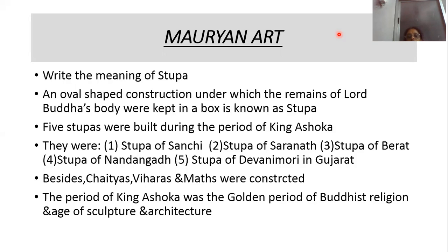The meaning of Stupa: an oval-shaped construction under which the remains of Lord Buddha's body — teeth, nails, hair, ashes, bones — were kept in boxes. Five Stupas were built during King Ashoka: Stupa of Sanchi, Sarnath, Beret, Nandangat, and Devanimori in Gujarat. Chaityas, Viharas, and Muts were also constructed. King Ashoka's period is known as the golden period of Buddhist religion.